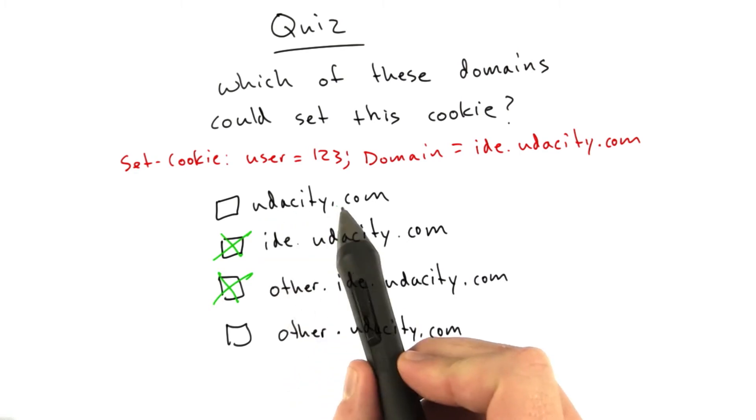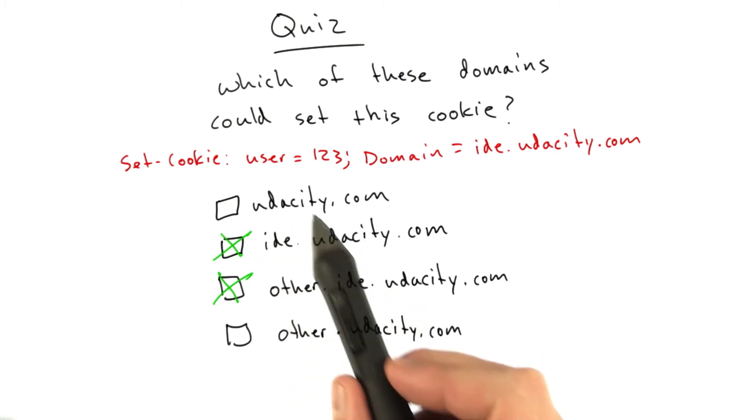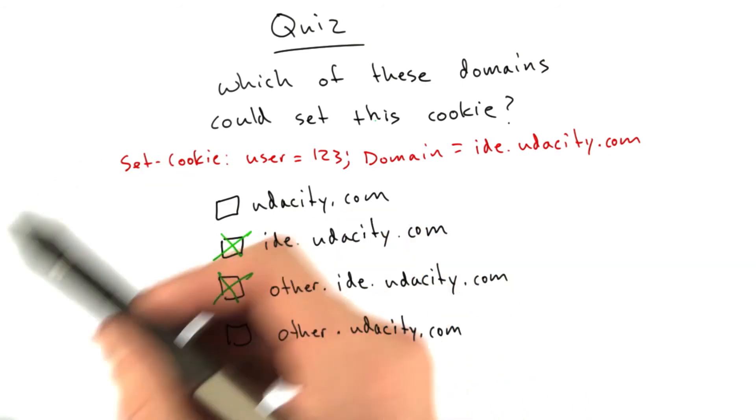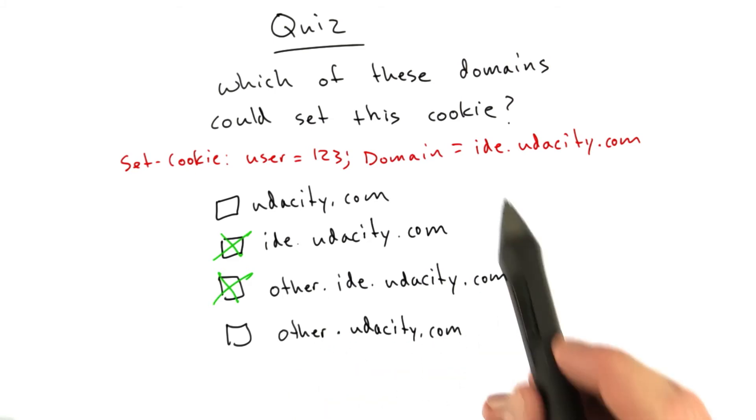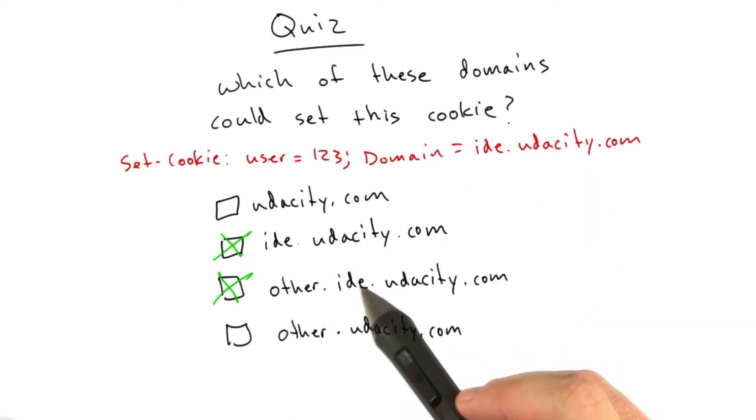What is not a correct answer is udacity.com. Other.ide can't set a cookie for udacity, which would get sent to any subdomain of udacity, and it can't set a cookie for a sibling. Other.udacity.com can't set this cookie. Only these two domains can set this cookie.